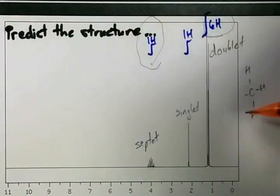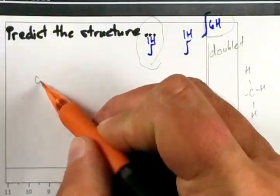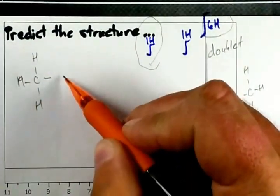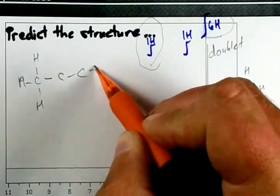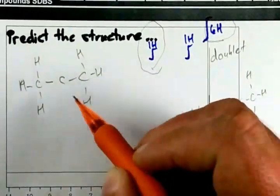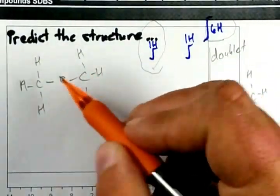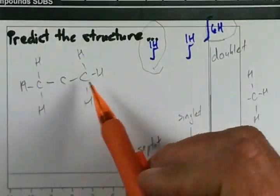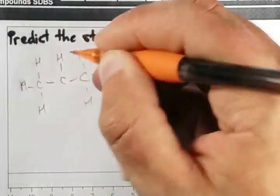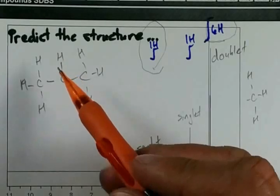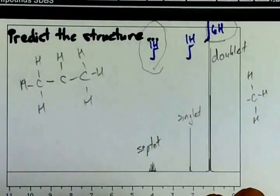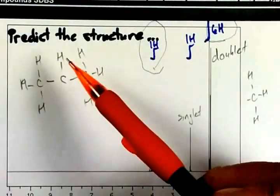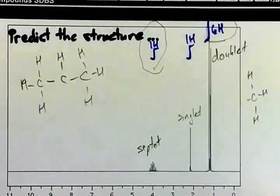We only have eight total, so I'm going to guess that we have two methyl groups. There's a CH3, and there's a CH3, and they're all equivalent to each other right now, but I'm not done with my molecule. This carbon is adjacent to both of them. If this carbon has a single hydrogen on it, he'll be split six times for those six equivalent hydrogens, and these six equivalent hydrogens will be split once because of him. I'm liking this structure so far.